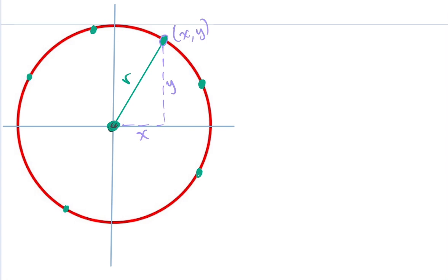So x and y, the coordinates of this point on the circle, are really the same as the vertical and horizontal distance between this point and my circle's center.